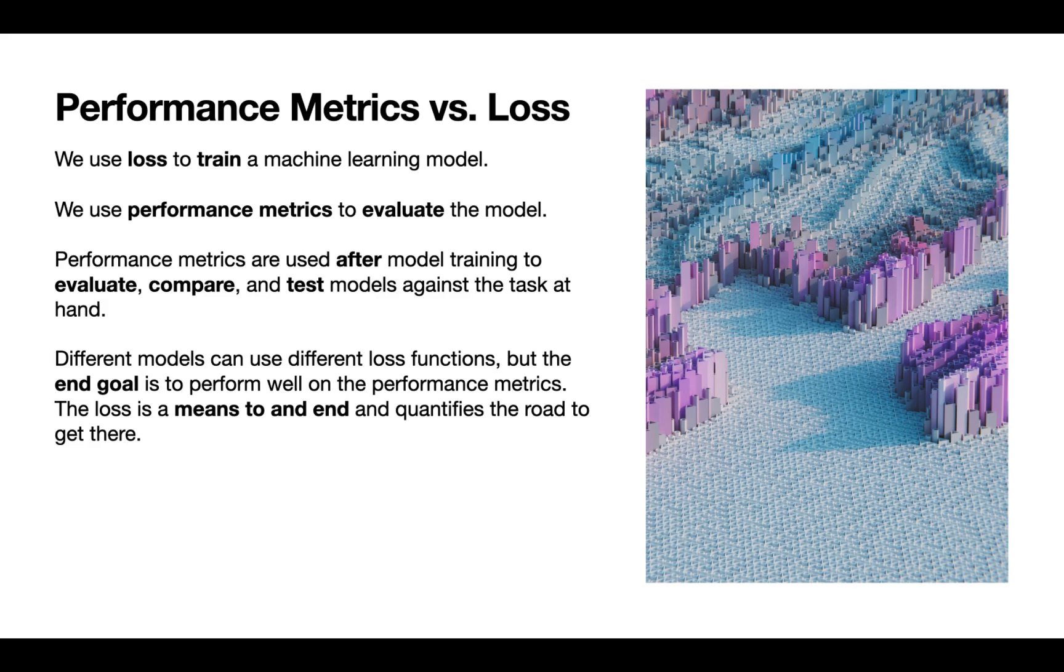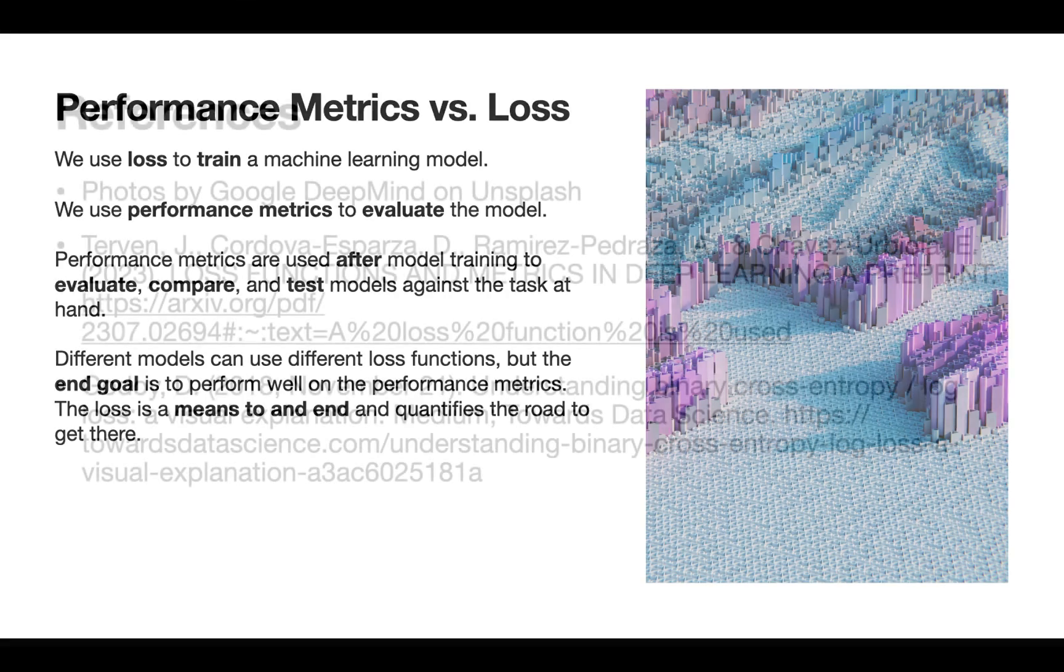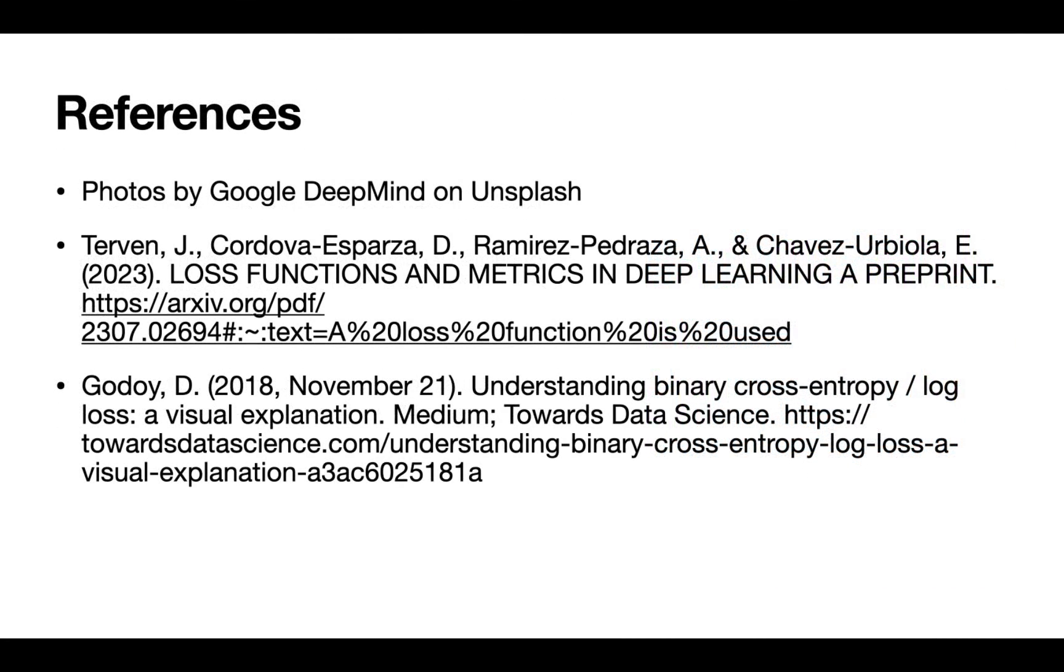You might evaluate the models using the same metrics, but they might have been trained with different loss functions. We can say that the loss is a means to an end. The loss just quantifies the road to get there, and the performance metrics is then telling us how well we actually ended up.